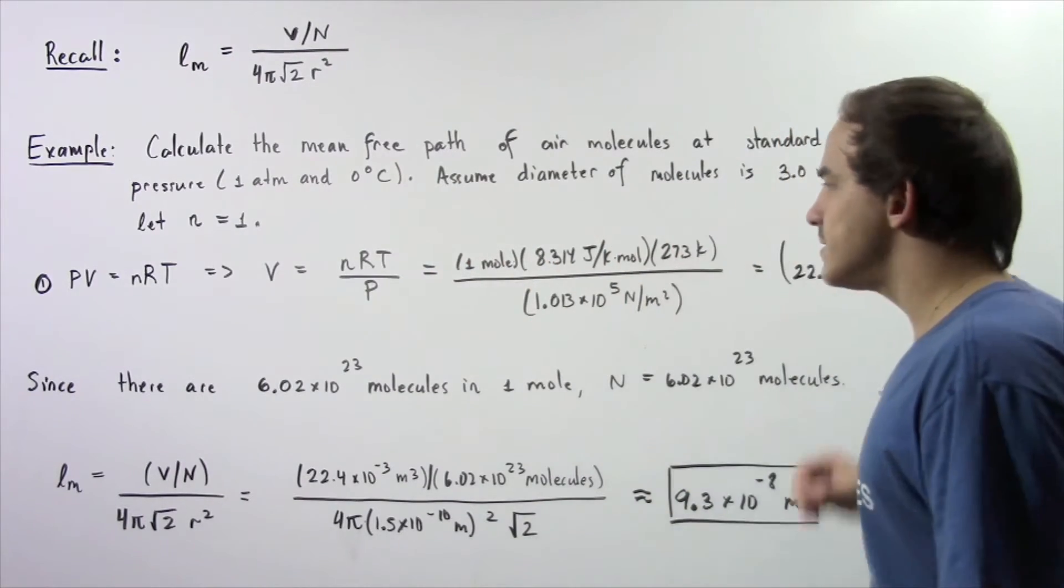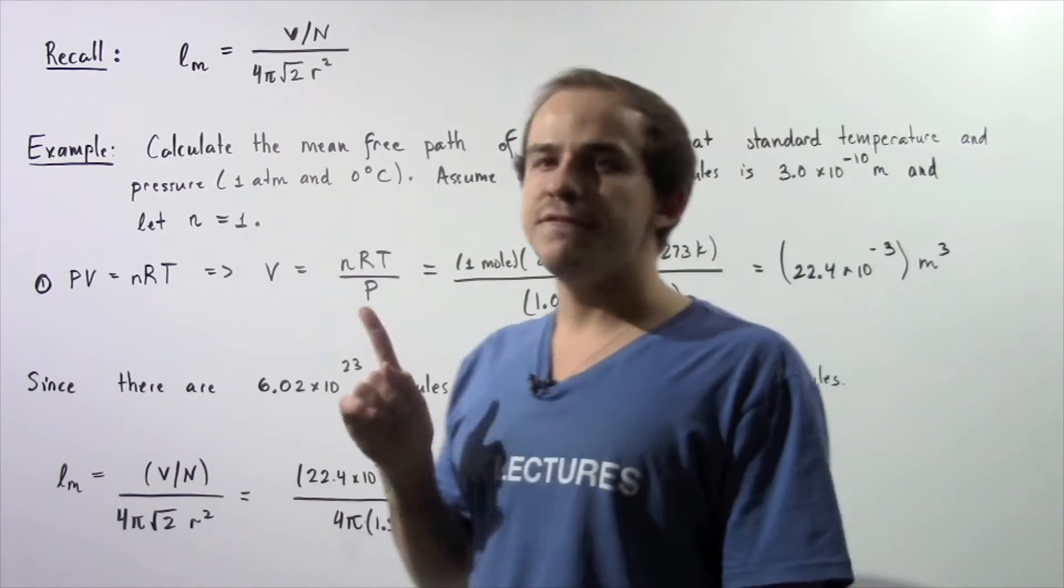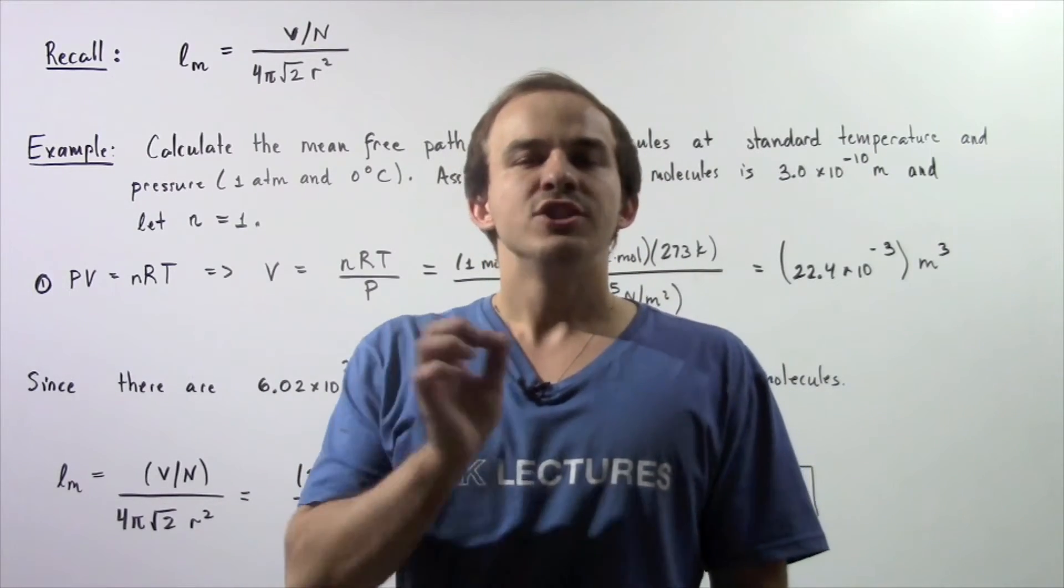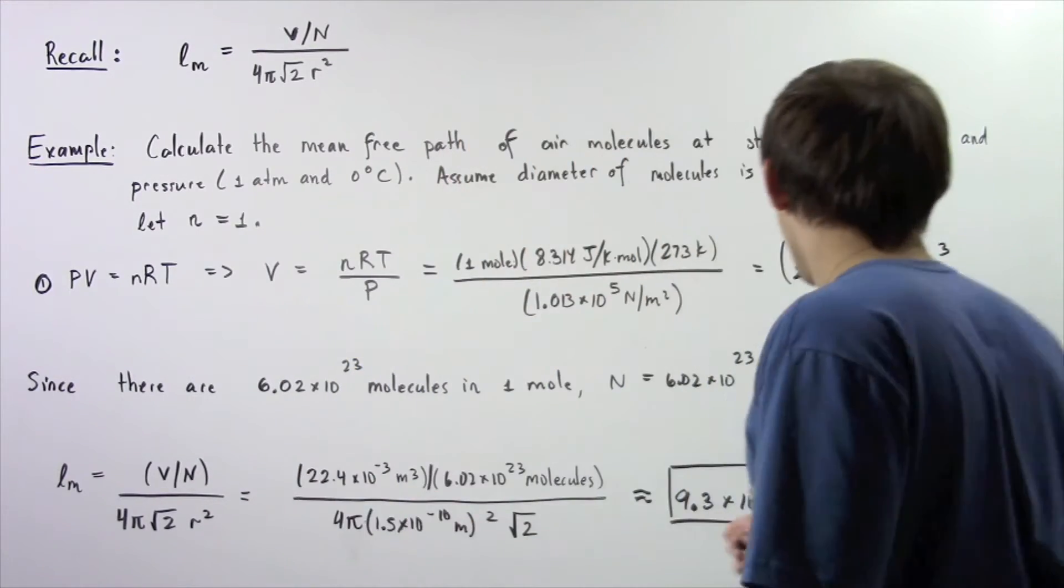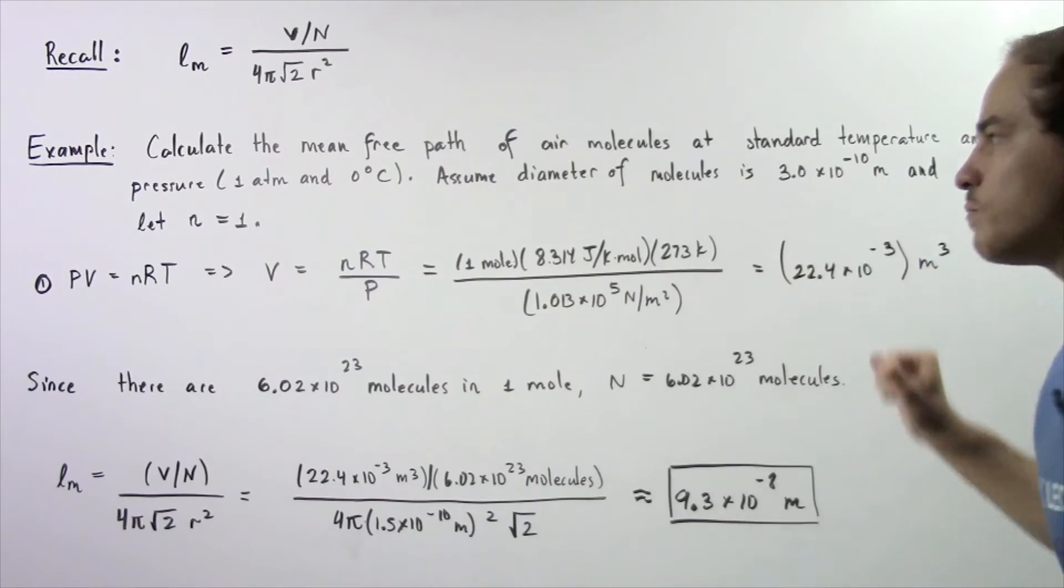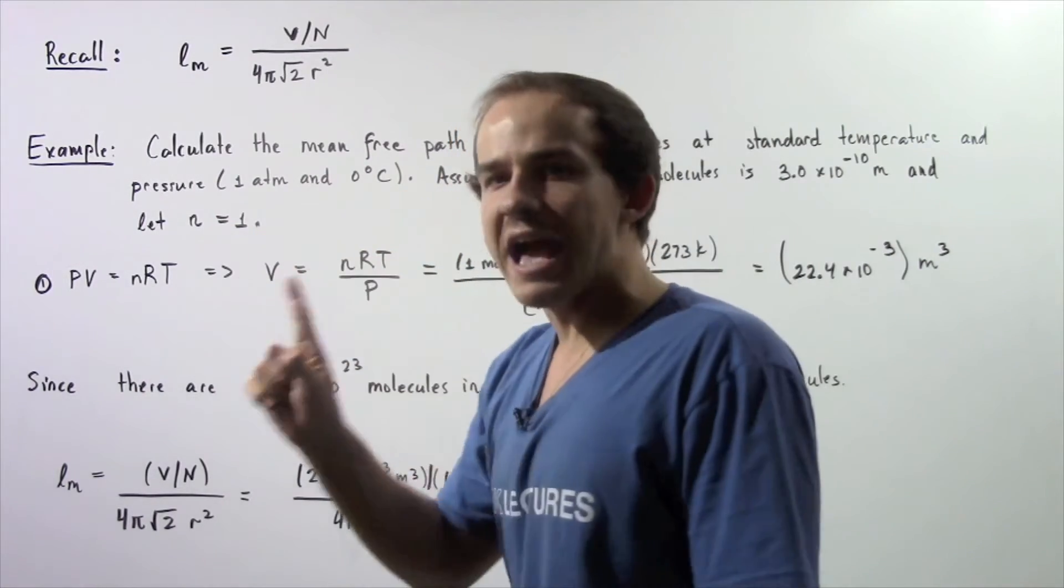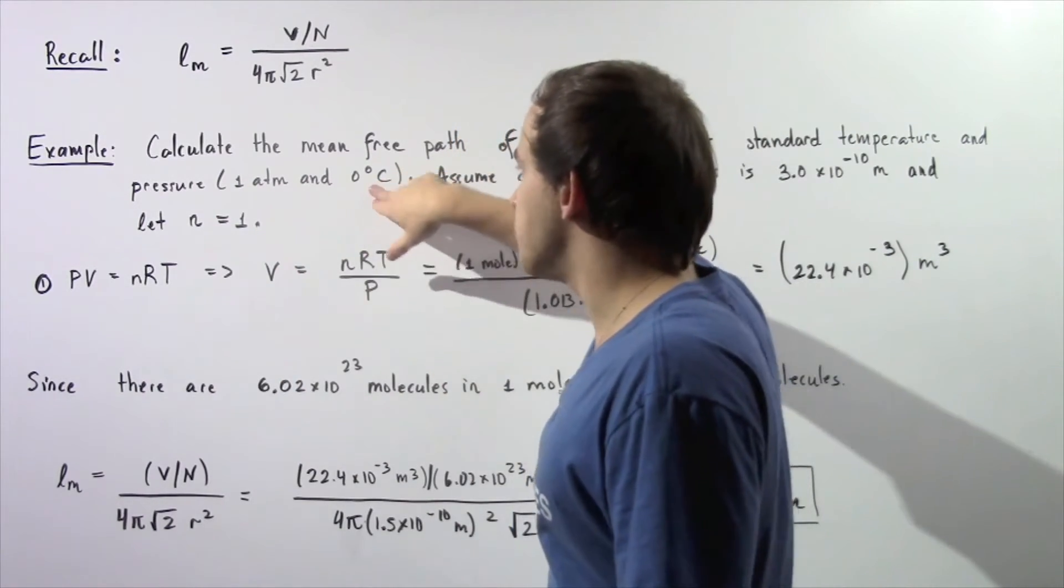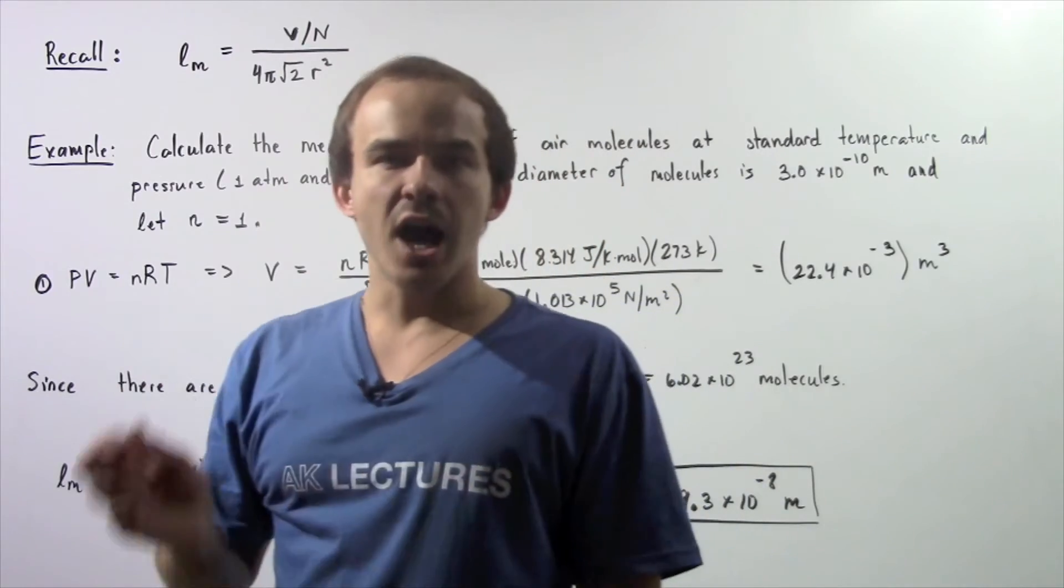We plug this into our calculator and we find that the volume is equal to 22.4×10⁻³ meters cubed. So this is our volume that 1 mole of gas molecules at this temperature and pressure takes up.